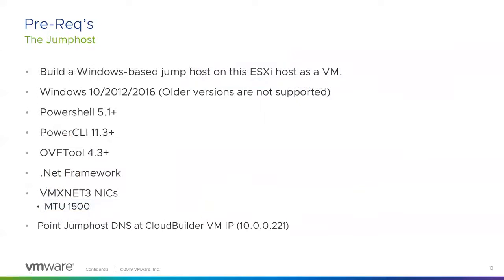Moving on to the prerequisites for the jump host: we're looking for a Windows-based jump host. Most people run it as a virtual machine on the ESXi host. It needs to be Windows 2010, 2012, Windows 10 desktop, 2012 or 2016 server — older versions are not supported. I've seen some people try Windows 7, and that does not have the right version of PowerShell or be able to install the right versions of the .NET framework to get this to work.